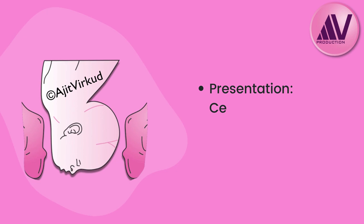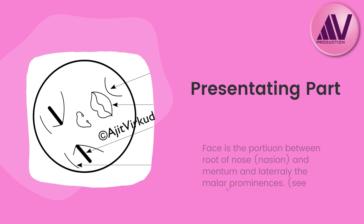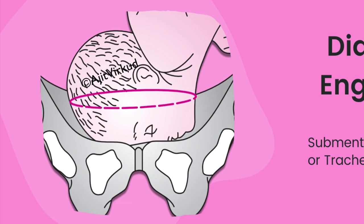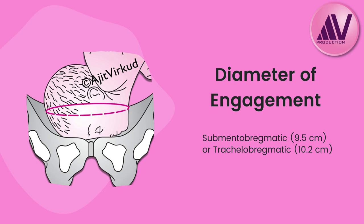The presentation is cephalic. Attitude is complete extension of head. The presenting part is face, which is the portion between root of nose (nasion) and mentum, and laterally the malar prominences — a C figure. The diameter of engagement is submentobregmatic, which is 9.5 centimeters, or sometimes trachelобregmatic, which is 10.2 centimeters.